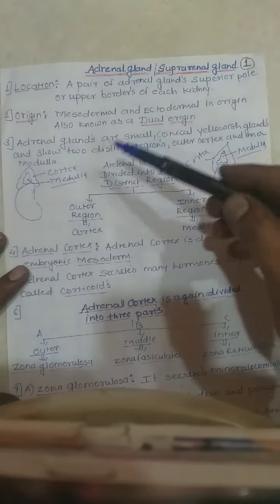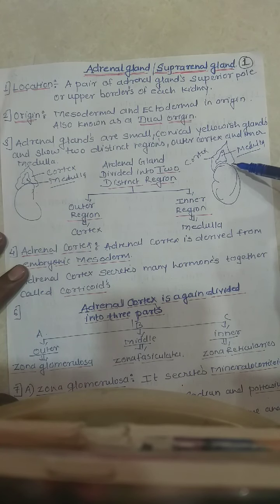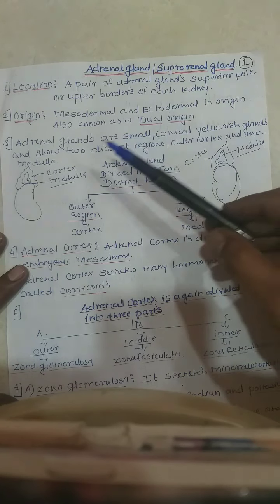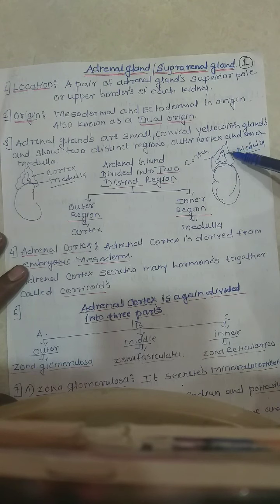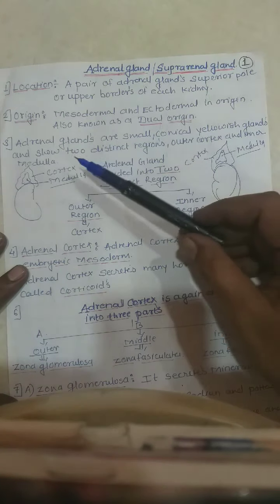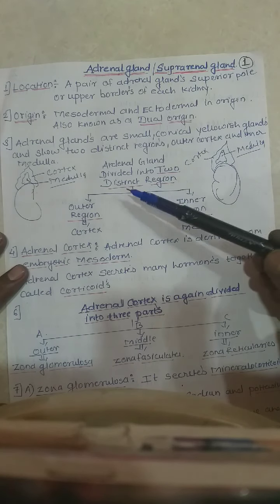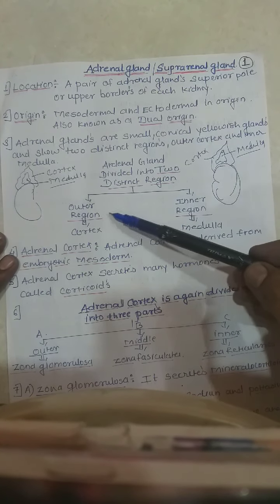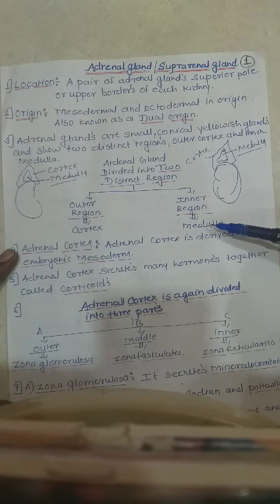The adrenal gland is small, conical or cone-shaped, yellowish in color, and shows two distinct regions. The outer region is called the cortex region and the middle or inner region is known as the medulla.